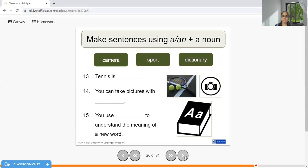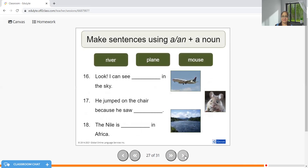Tennis is a sport. You can take pictures with a camera. You use a dictionary to understand the meaning of new words. Look, I can see a plane in the sky. He jumped on the chair because he saw a mouse. The Nile is a river in Africa.